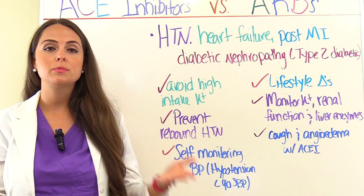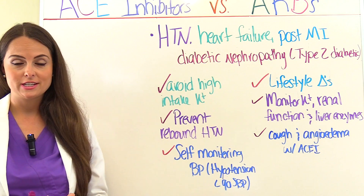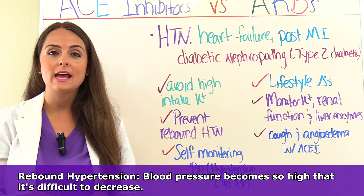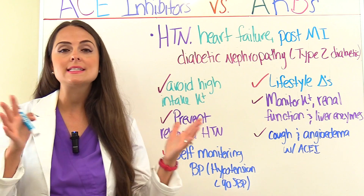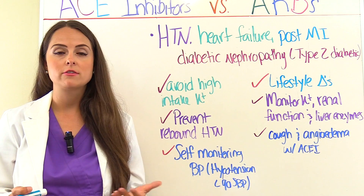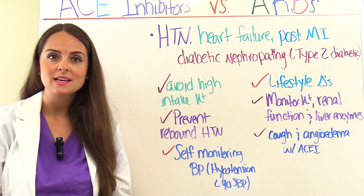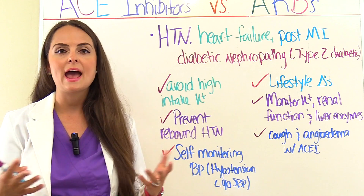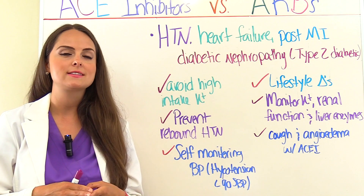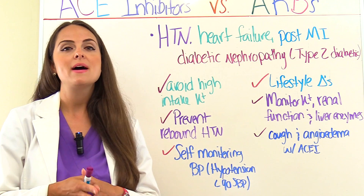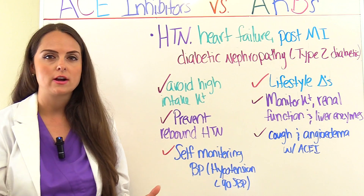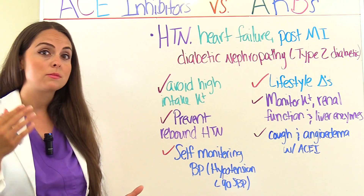You want to talk to the patient about how to prevent rebound hypertension — where blood pressure gets so high it's hard to bring it back down — which tends to happen when a patient abruptly quits taking their ACE inhibitor or ARB. Educate the patient about the importance of never just stopping the medication. For example, if a patient develops that dry, nagging, persistent cough from an ACE inhibitor, instead of just stopping it they need to talk to their doctor, who can switch them to something else where they won't have that dry cough.